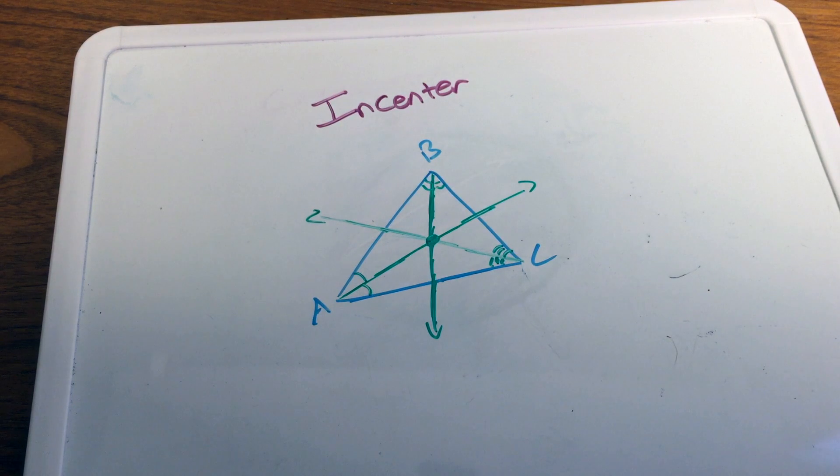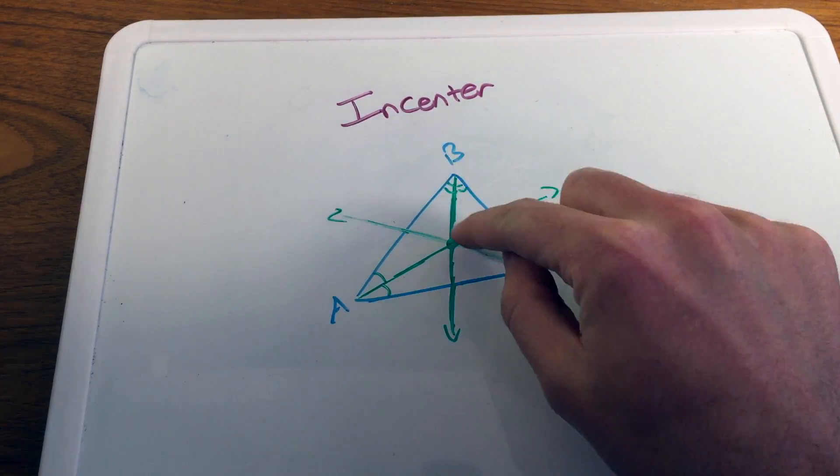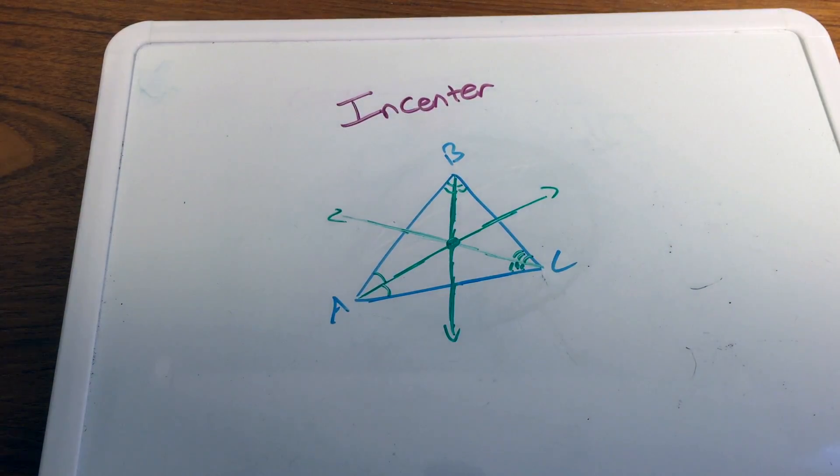And voila, right here is our point of concurrency of the three angle bisectors of a triangle, which creates now our incenter. That is the incenter right here. The point of concurrency. What do we know about this point of concurrency? What can we conclude about this point of concurrency? What's so special about it?